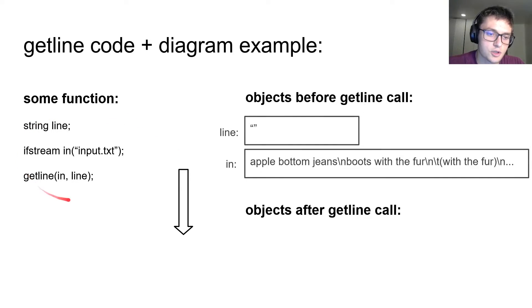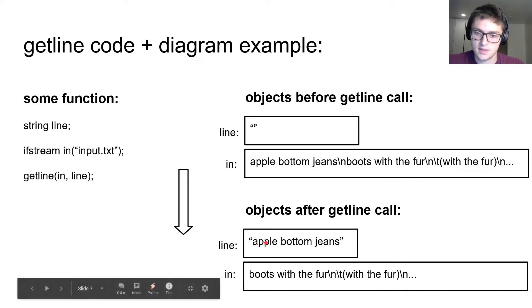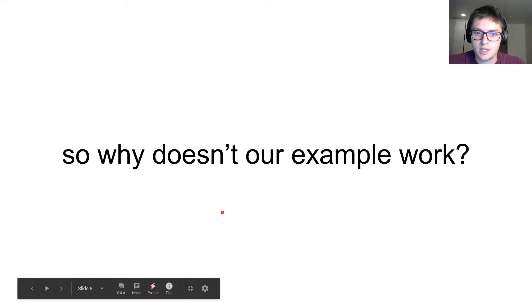So same function, we're using getline instead of the extract operator this time. So this is pretty easy, we would expect to get the first line, so up to and not including this newline character, and that's exactly what happens. The stream now has apple bottom jeans, and that newline character removed, but our string variable has apple bottom jeans in it. Seems pretty easy.